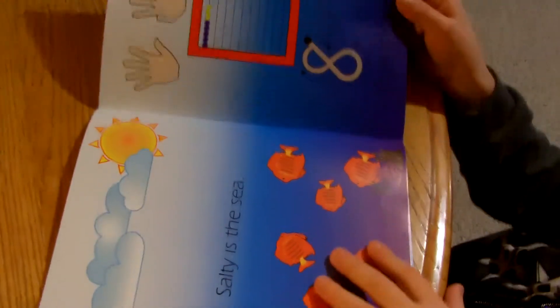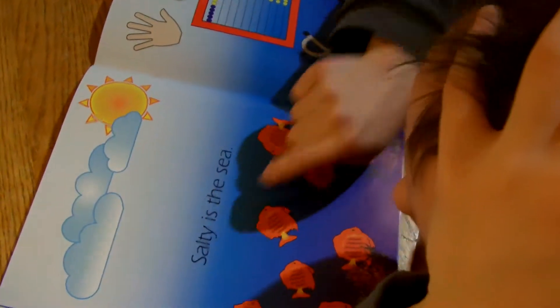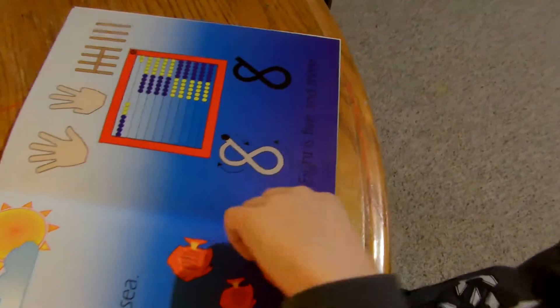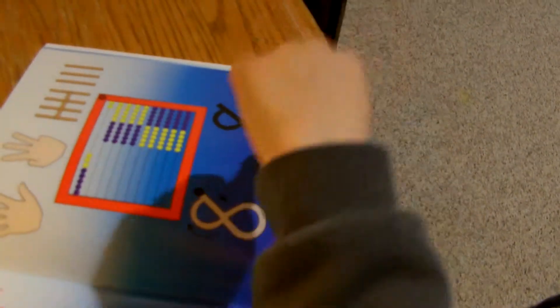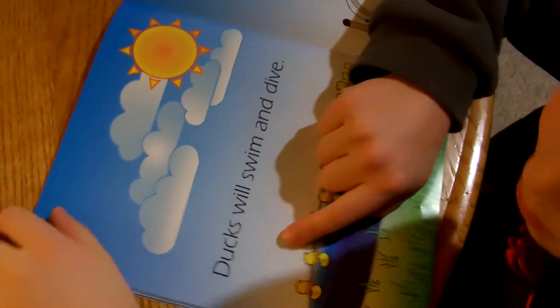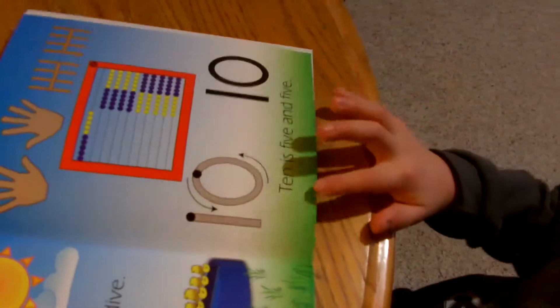Oops, did I skip one? Yeah, I did. So, D is a C. Eight is five and three. Dr. Swim and dive. Ten is five and five.